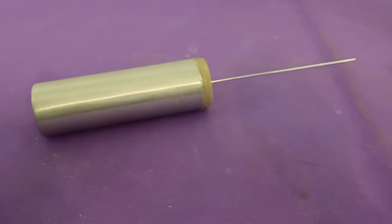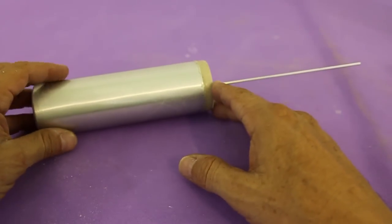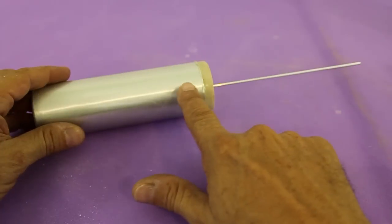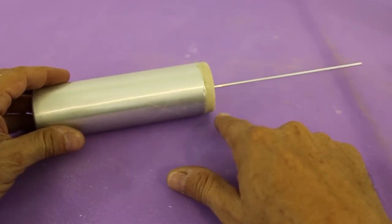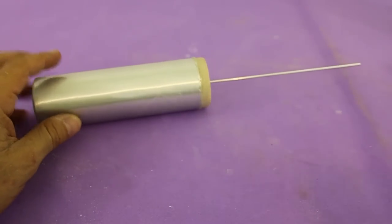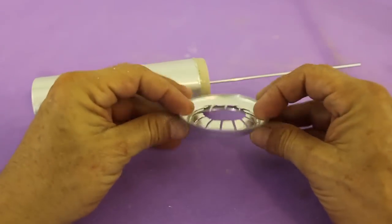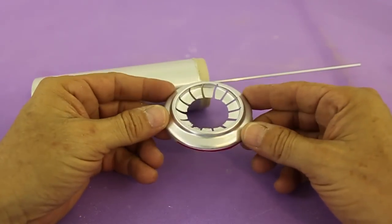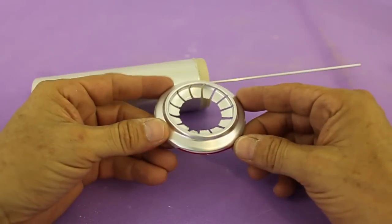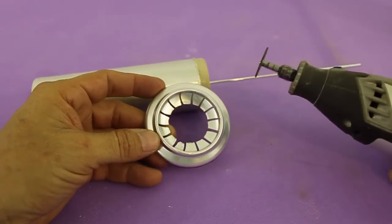The last step to complete the displacer cylinder is to put heat radiators in the upper part. You can do this taking the base of a soda can and cutting like this. This can be done with the help of your motor tool.